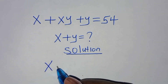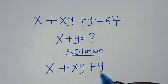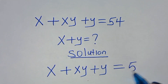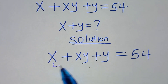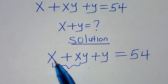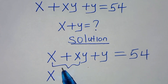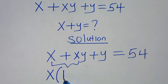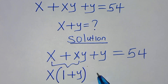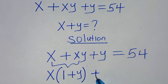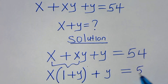We have x plus xy plus y, this is equal to 54. From this particular part here, you find that x is common, so we can factor out x, so that we have x into the parentheses, this is 1 plus y. Then here we have plus y, this is equal to 54.